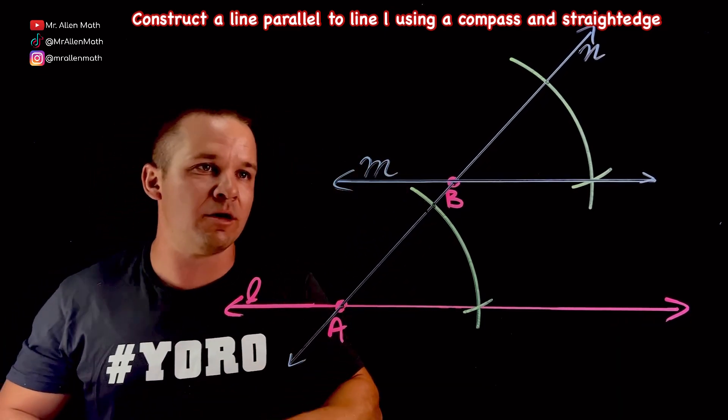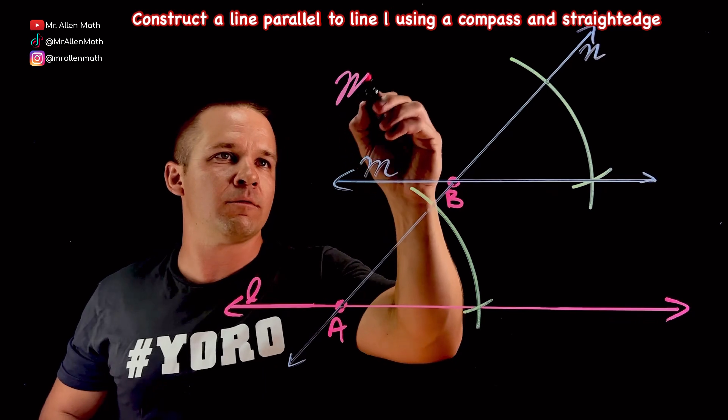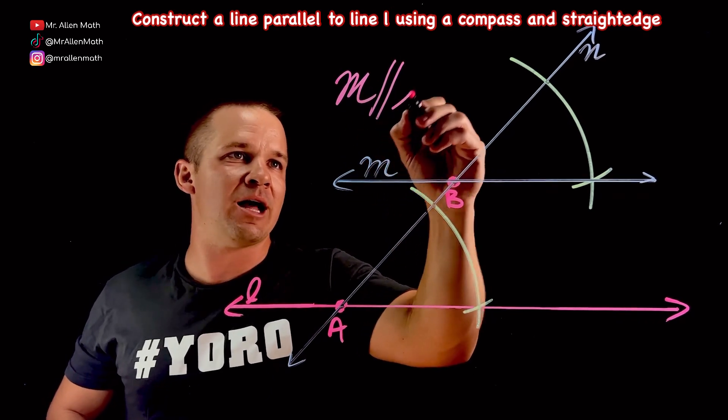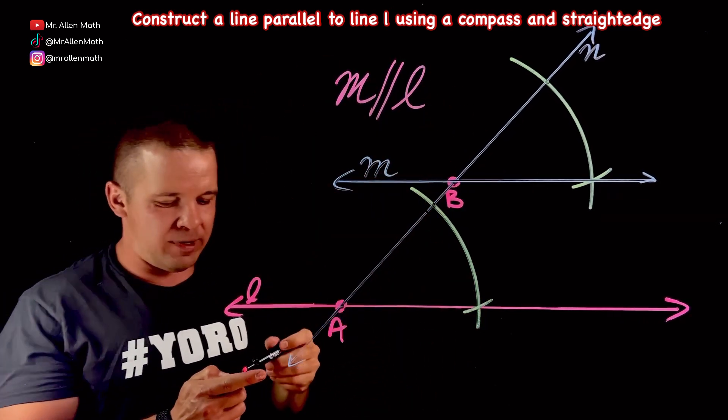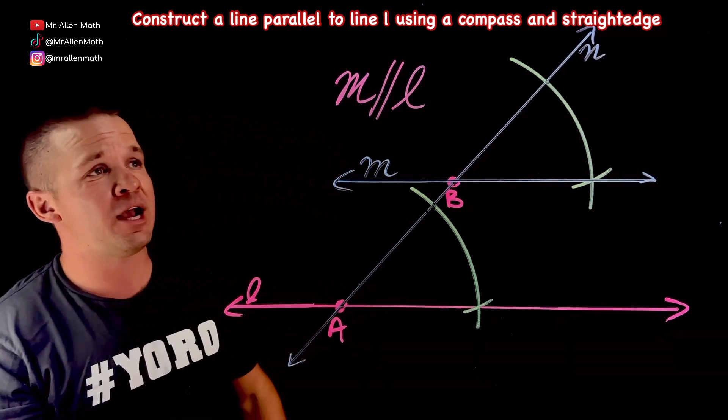But now I have M. This marker's running out here. I have line M is parallel to line L through point B.